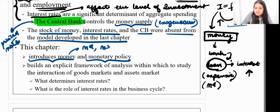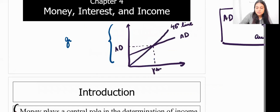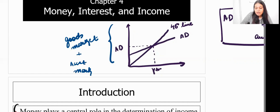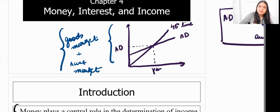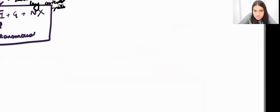This chapter builds an explicit framework of analysis to study the interaction of the goods market and the asset market. Till now we talked about the goods market with the AD-Y diagram. Now I want to combine the asset market — the demand and supply of money — and come to one final equilibrium. From the goods market and the money market, I want to derive the aggregate demand curve. There are two aspects to deriving the AD curve.